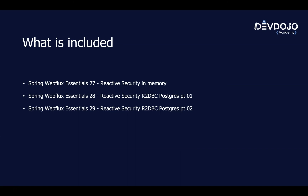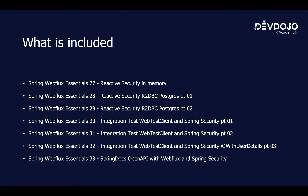Then we will see how to apply security — we'll use security in-memory first, and then we are going to change and get the data from the database, doing a full authentication against a user saved in the database. Then we are going to refactor the integration tests we have, because now we are securing our endpoints, and we'll see how to use the @WithUserDetails annotation to have users set up nicely for our integration tests.